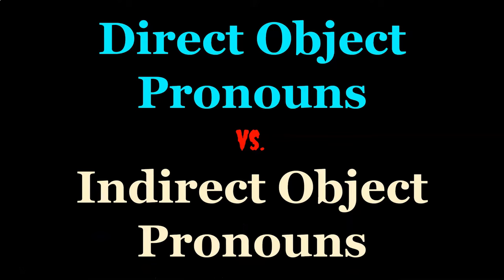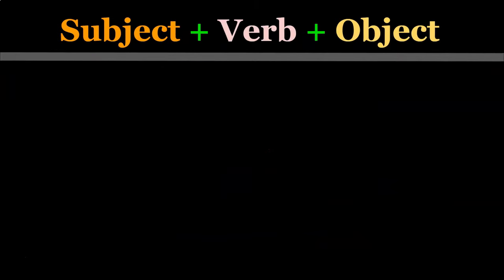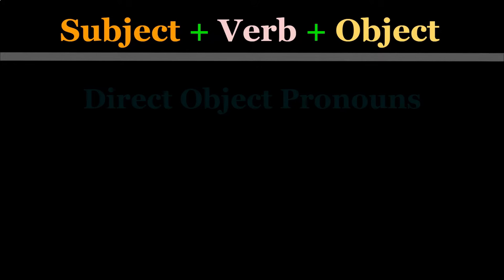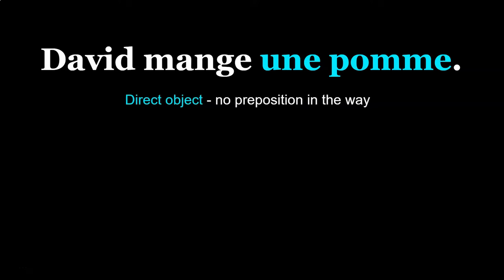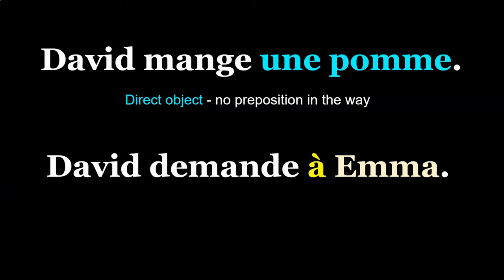The object is what is impacted by the verb — the object is on the receiving end of the action. Objects can be either direct or indirect. Direct objects are when there is nothing in between the verb and the object — the verb acts directly on the object, with no preposition in between. For example, in 'David mange une pomme,' manger acts directly on pomme, making pomme a direct object. However, in 'David demande à Emma,' the preposition à is in the way, making Emma an indirect object.